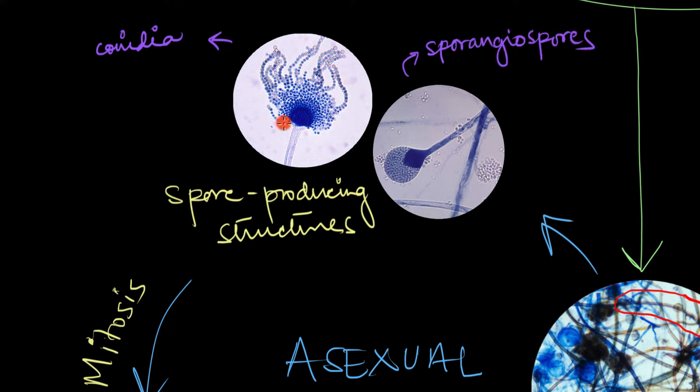Conidia are produced in chains at the tip of the hyphae. This blue part you can see is the tip of the hyphae, and these are the chains of conidia. These dotted structures are the spores, they are the conidia.